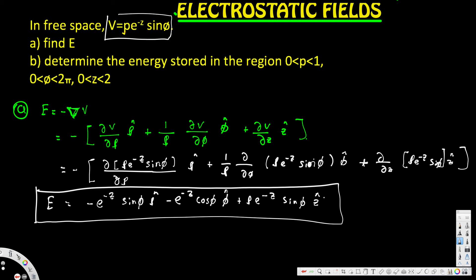Now the second question is asking us to determine the energy stored in the region ρ from 0 to 1, φ from 0 to 2π, and z from 0 to 2. First, we need to know the energy equation: U = ∫ ½ε₀|E|² dV. We know the E value, so we just have to square it to get |E|², then integrate over the bounded region that's already provided.